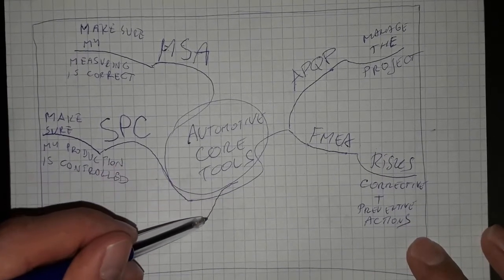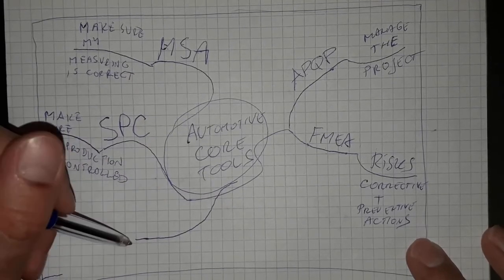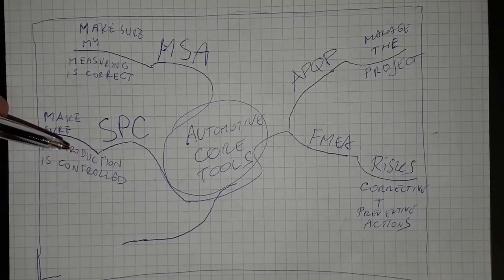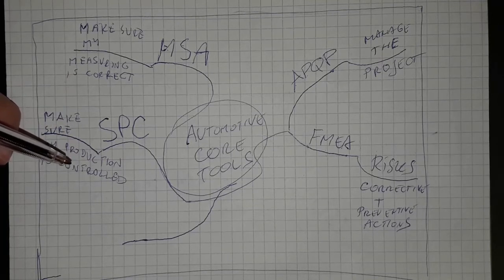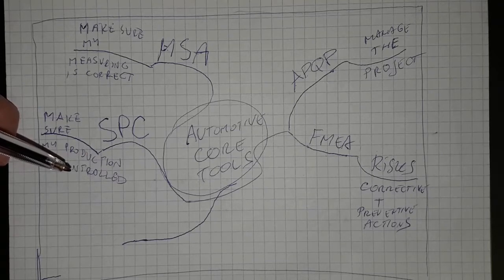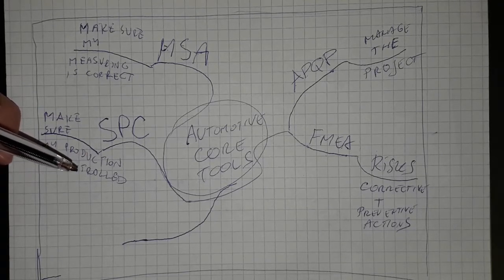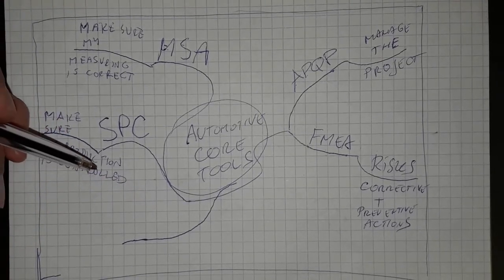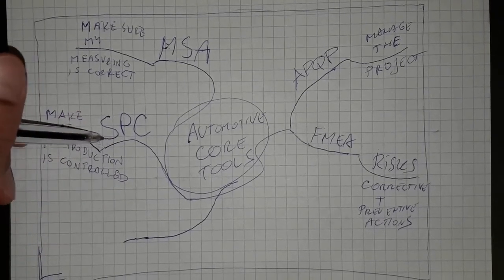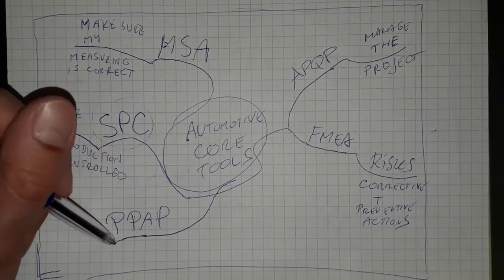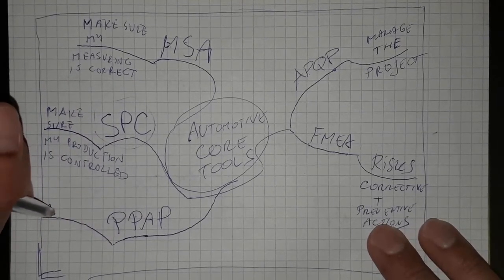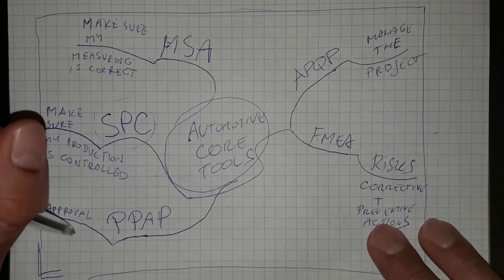The last core tool is PPAP — Production Part Approval Process. When I want to sell my parts to my customer, I need to make sure we both agree that I produce a correct part. The customer can be sure that the part is okay and they can install it into their subsystem or the car. It is a confirmation of all the things done during the process — essentially an approval of my product.